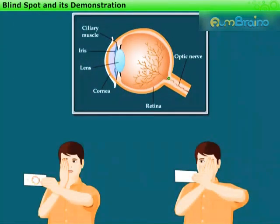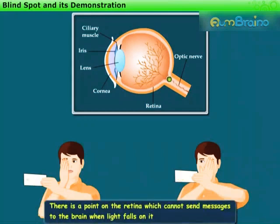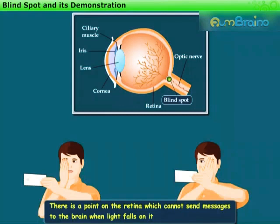The disappearance of the cross or the round mark shows that there is a point on the retina which cannot send messages to the brain when light falls on it. This point is called the blind spot. Hence, the discussed activity demonstrates the existence of the blind spot in the human eye.